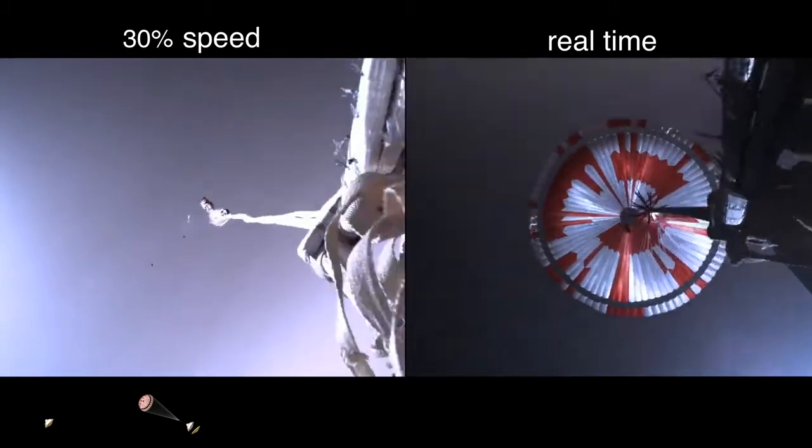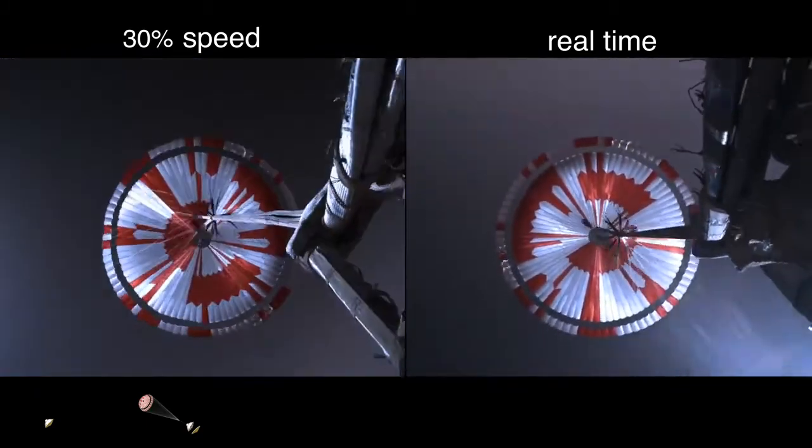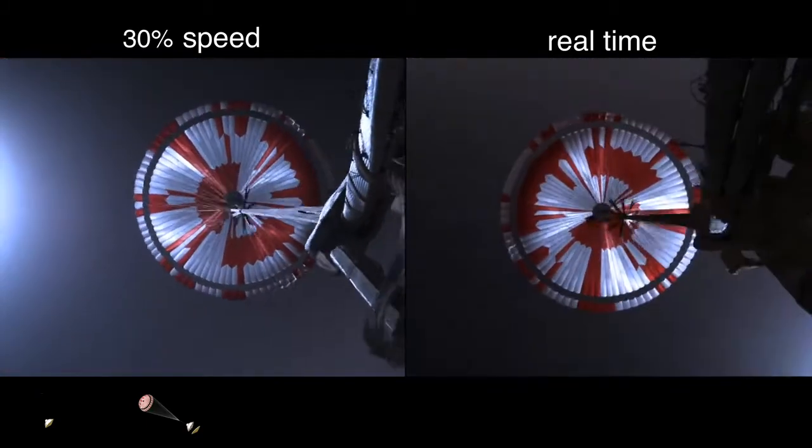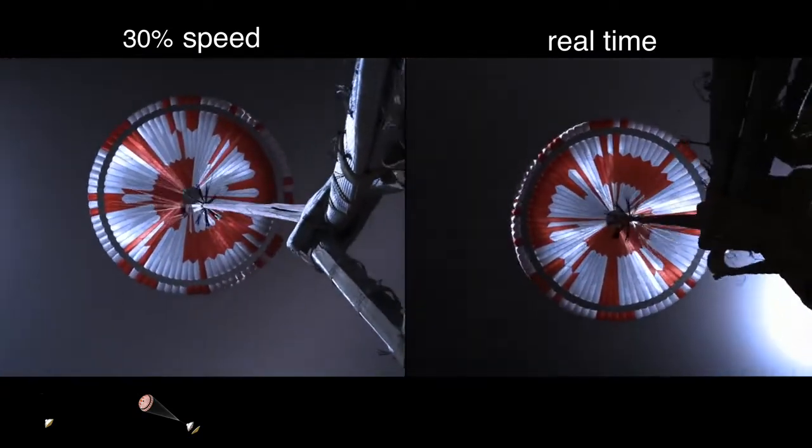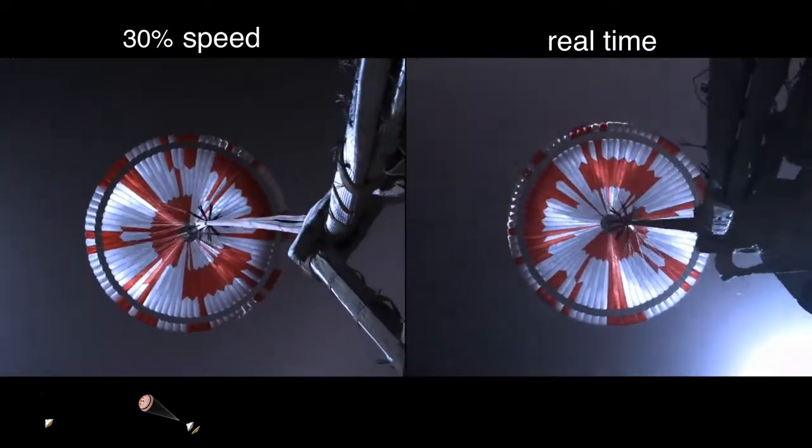Parachute deployed. The navigation has confirmed that the parachute has deployed, and we are seeing significant deceleration in the velocity. Our current velocity is 440 meters per second at an altitude of about 12 kilometers from the surface of Mars.